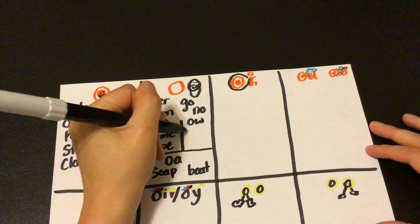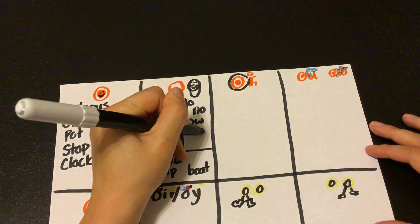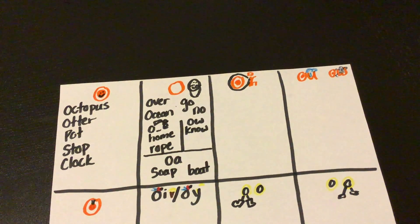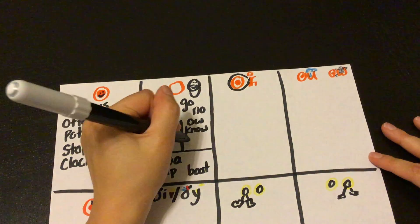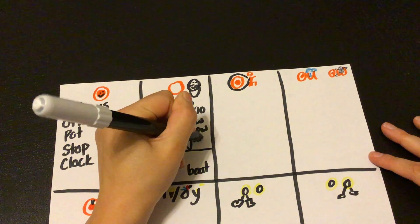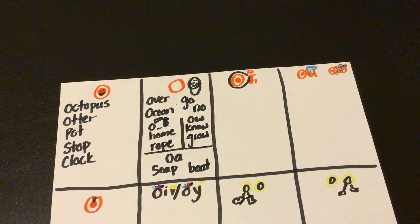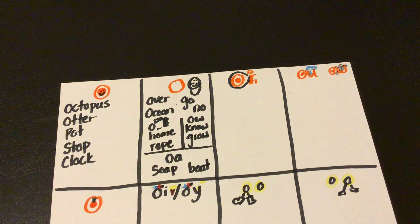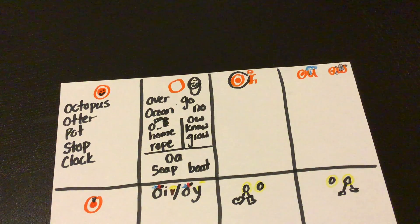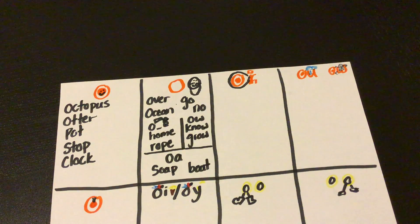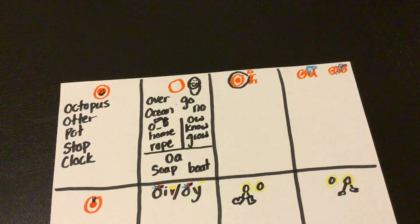And then for O-W words, we have words like no, I know the answer, and grow, show, tow, like a tow boat, right, if I'm pulling something behind me. So there's our Mr. O words.